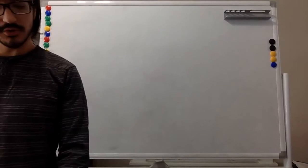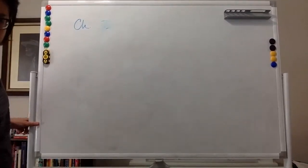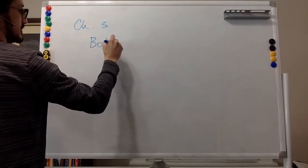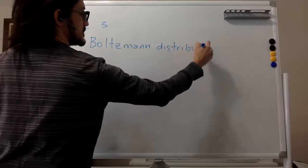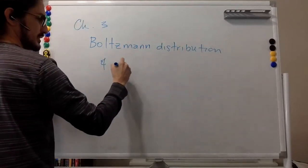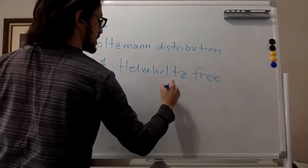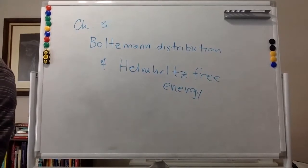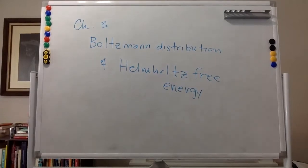Today we're going to start chapter three, which covers the Boltzmann distribution and the Helmholtz free energy. Both of these things are building blocks of statistical mechanics.